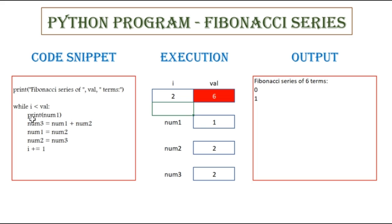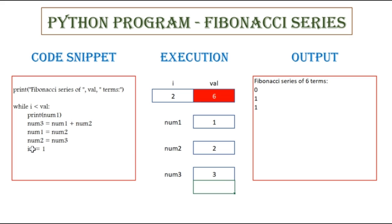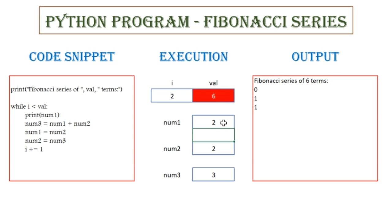While 2 less than 6 — print num1, so now num1 is 1, so 1 gets printed here. Num3 equals num1 plus num2, so 1 plus 2 which will be 3, and it gets updated in num3. Num1 equals num2, so the value of num2 is 2, which will be updated to num1, so num1 also becomes 2. Num2 equals num3, the value of num3 is 3, so num2 will become 3. i plus equals 1, so now i becomes 3.